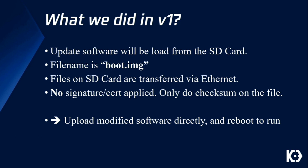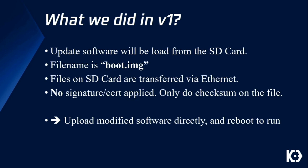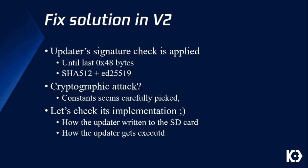After we submitted the bug reports, Tesla added a signature check process. The updated software is now checked using SHA-512 and ED25519. We considered doing a cryptographic attack, however we don't think it's easy because all the constants and keys seem carefully picked — they have really talented engineers. So we turned to check the implementation. There are two things to check: how the updater is written to the SD card, and how the updater is executed.